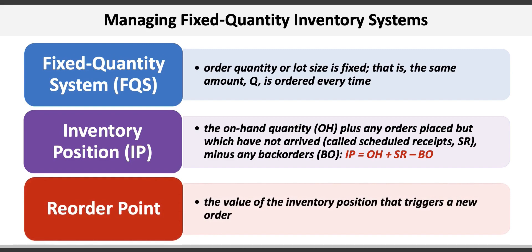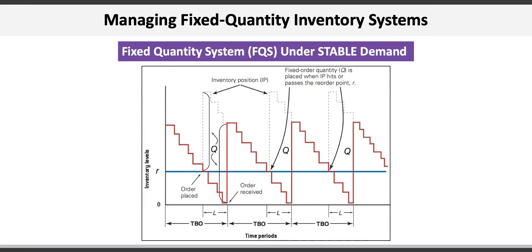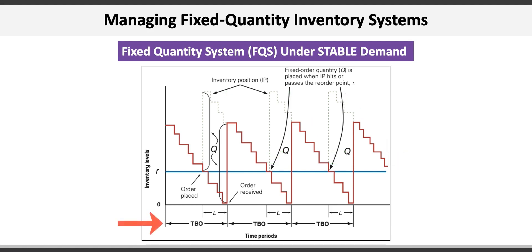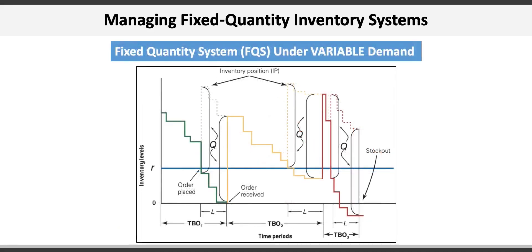The reorder point in a fixed quantity system is the value of inventory position that triggers a new order. Under stable demand, the horizontal reorder point line R is fixed, and as the inventory position IP falls to that point, an order is placed for the exact same quantity every time. The drawdown of inventory is constant and predictable, resulting in the time between orders (TBO) and the lead time (L) being the same every cycle, with no stockouts occurring.